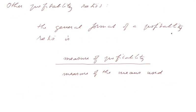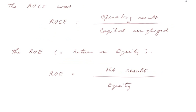The general format of a profitability ratio is a measure of profitability divided by a measure of the means used by the firm to generate this profitability. The ROCE was defined as the operating result divided by the capital employed, and we saw that this nicely gets rid of the structure of the capital employed. It is the same value whether we have a lot of equity and little debt or a lot of debt and little equity. In the last case, it is called a high leverage.